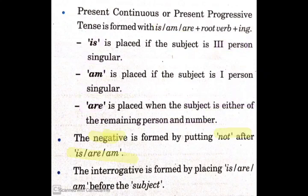If we want to make the negative, we put 'not' after is, am, or are. For example: 'I am not studying.' 'She is not sitting.' We have to put 'not' after is, am, or are.